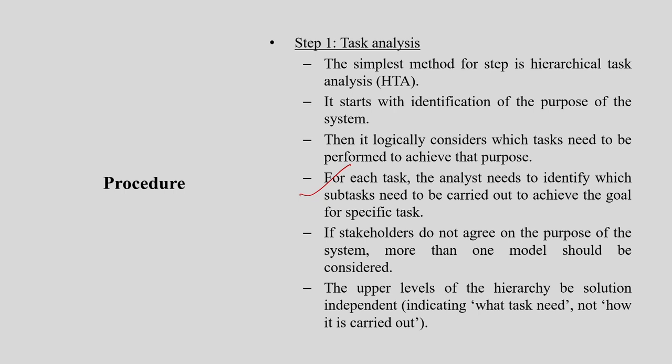The upper level of the hierarchy should be solution-independent. The top level only says what is to be done, not how it is done. When we answer 'how,' we create alternatives. The top-level portion is independent from any particular analysis. How things happen comes in the branches — the small components at the bottom — where you can have more alternative theories.